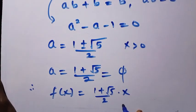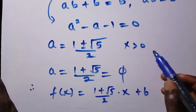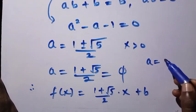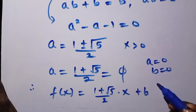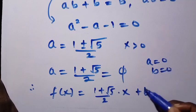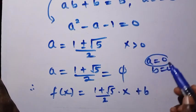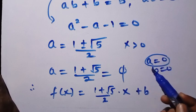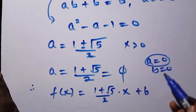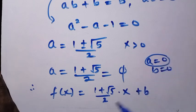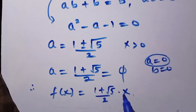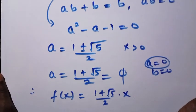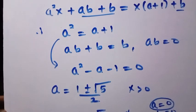Since b = 0, we don't need the constant term. So f(x) = ((1 + √5) / 2) · x, and substituting x = 2020 gives the same result as before. Thanks for watching and don't forget to subscribe — bye bye!